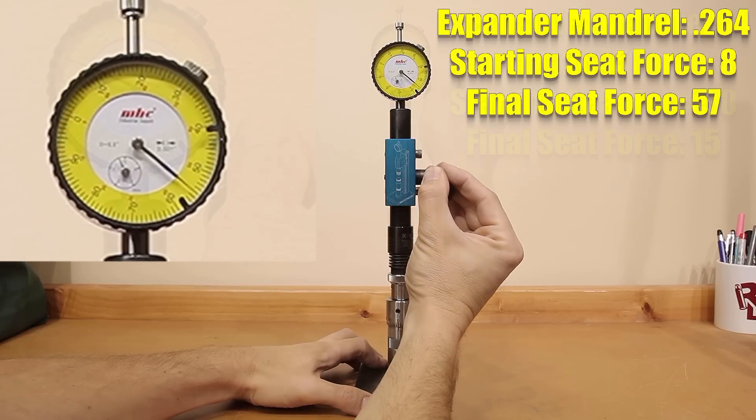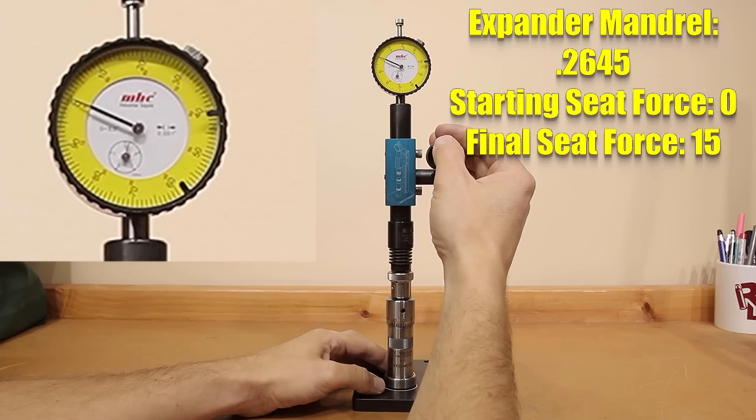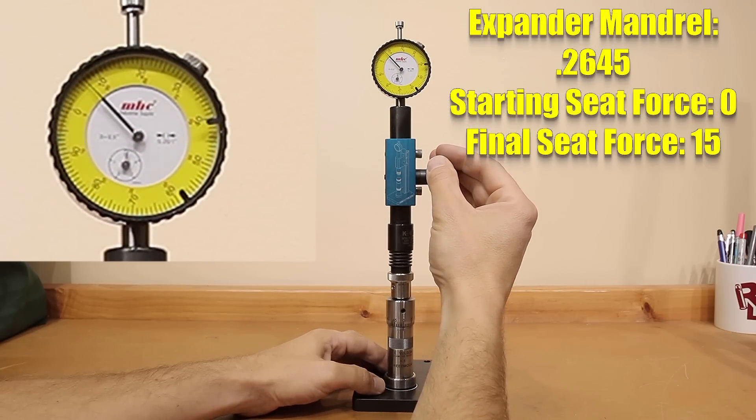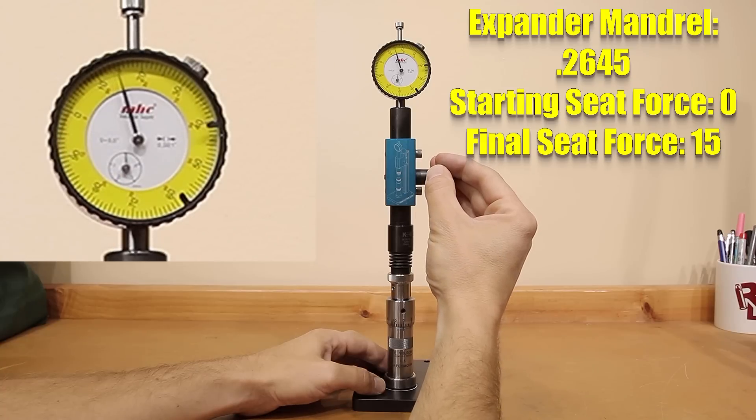As our neck tension drops to the lowest level we tested today at the 264 and a half, I listed our starting force at zero. As you can see, the projectile already started seating the case just with the weight of the cap, but our final seating force to seat our projectile was 15 pounds.